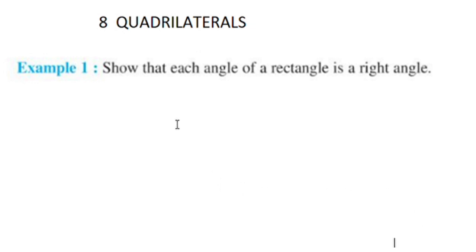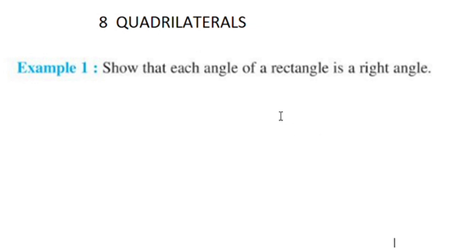Show that each angle of a rectangle is a right angle. We will prove that each angle is a right angle, that is, we will prove that each angle is 90 degrees.